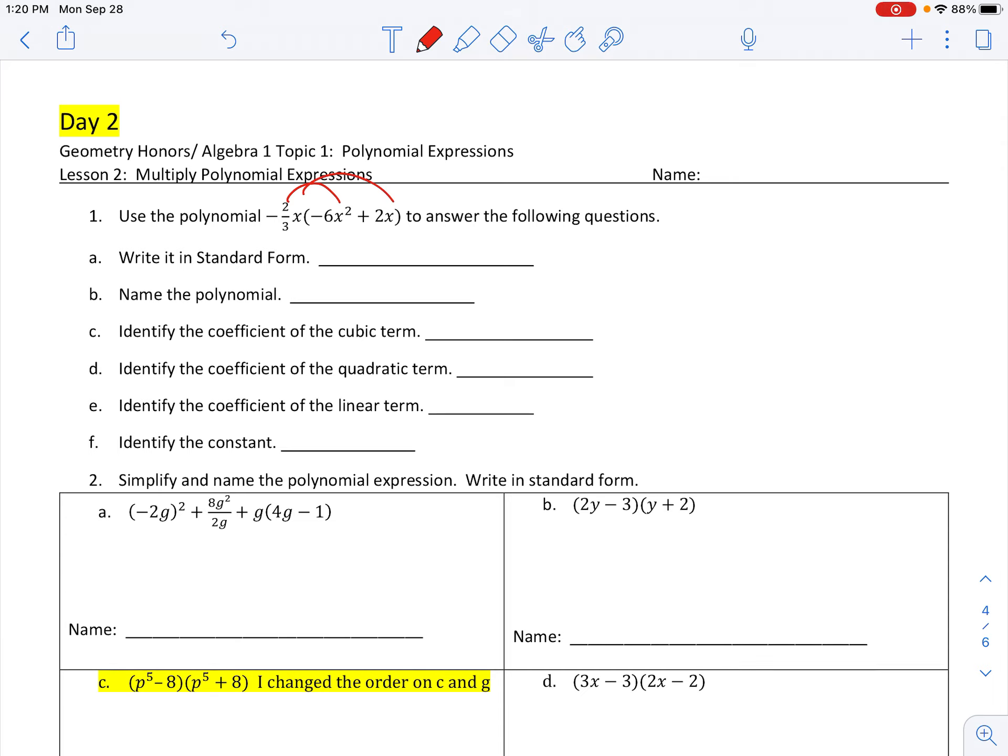Distribute the negative two-thirds x times that. So back to fractions. Negative two-thirds times negative six, that gives me 12 over 3, which is 4x to the third. And negative two-thirds times 2. So that's a negative, not 4, sorry. Yeah, that was right. Negative four-thirds, sorry, x to the second.